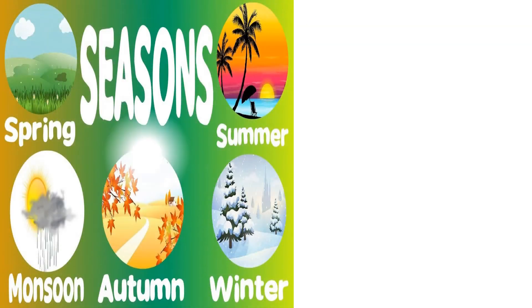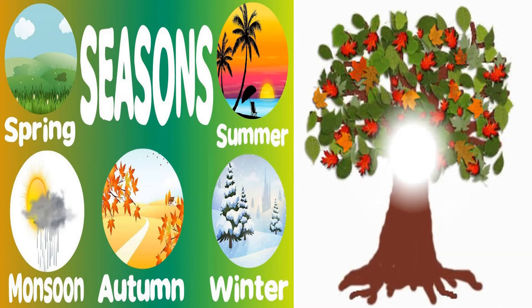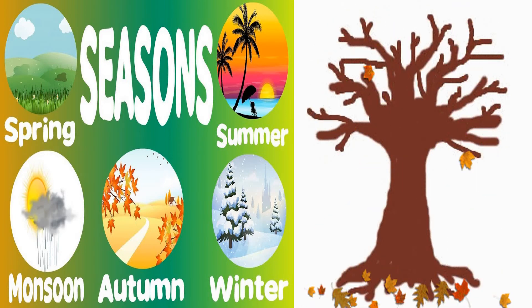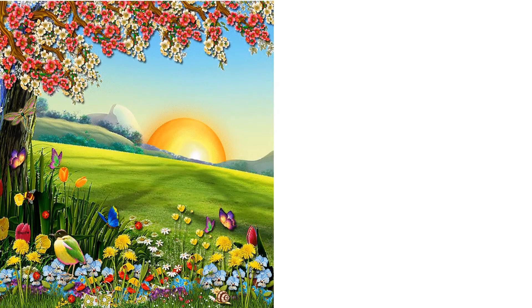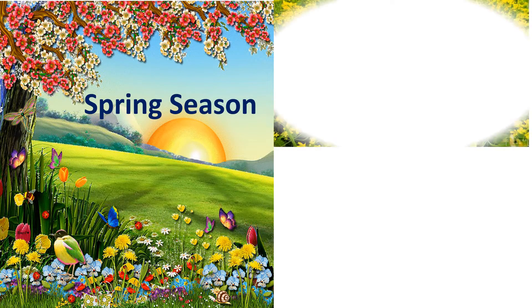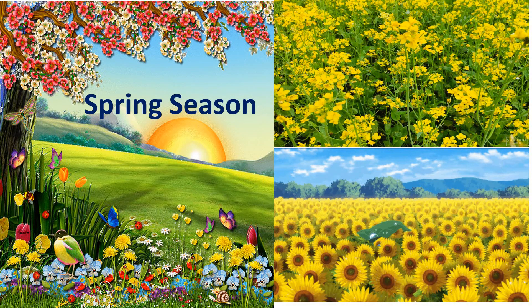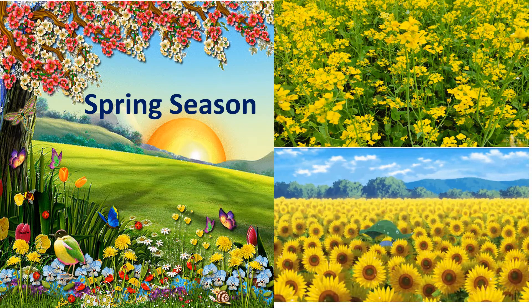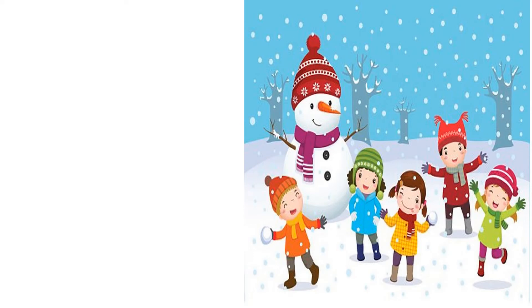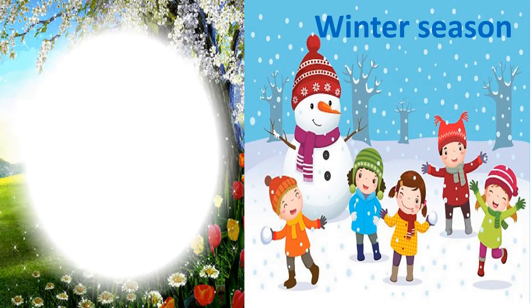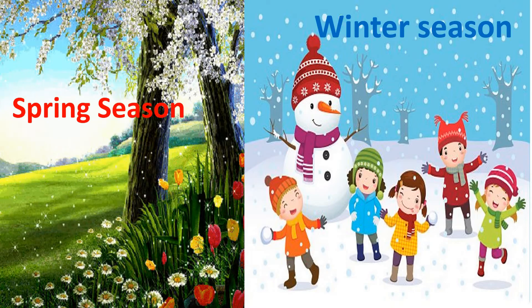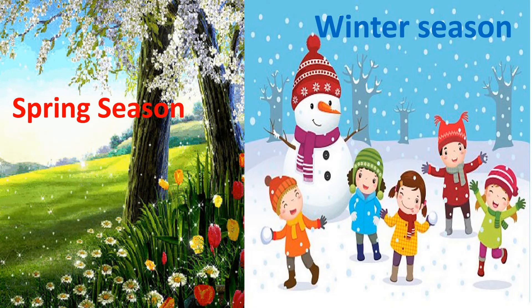There are five main seasons in India: spring, summer, monsoon, autumn, and winter. We talked about spring season — spring is the season of flowers and greenery. Many colorful flowers bloom and new leaves grow on trees. This season comes after winter and is the shortest season of the year. During spring, the weather is warm and pleasant.